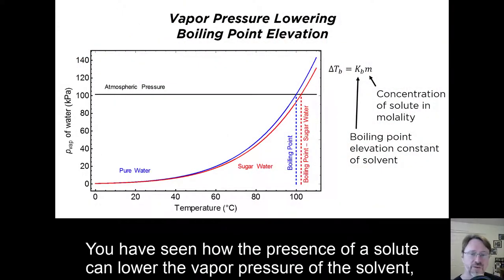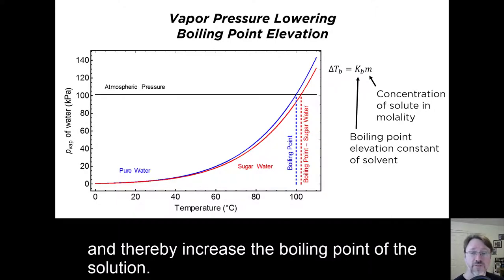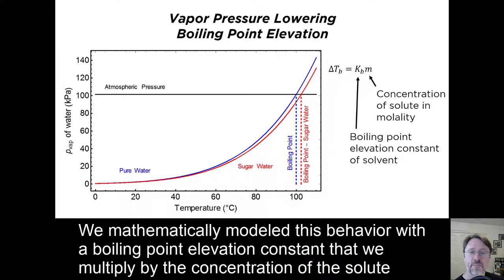You've seen how the presence of a solute can lower the vapor pressure of a solvent and thereby increase the boiling point of the solution. We mathematically modeled this behavior with a boiling point elevation constant that we multiply by the concentration of the solute in molality to get the change in boiling point.